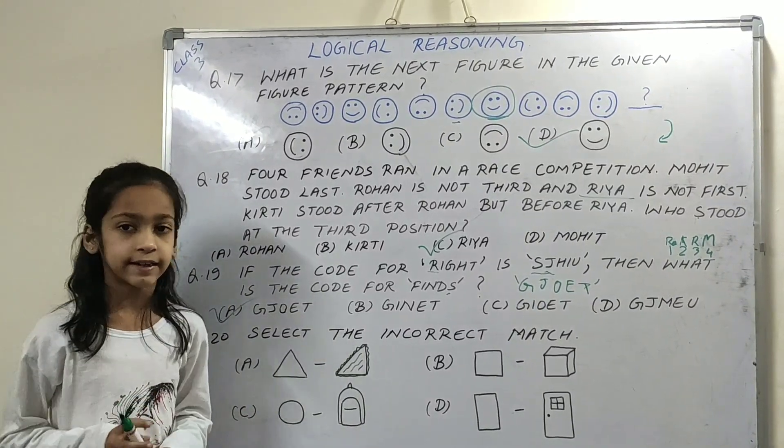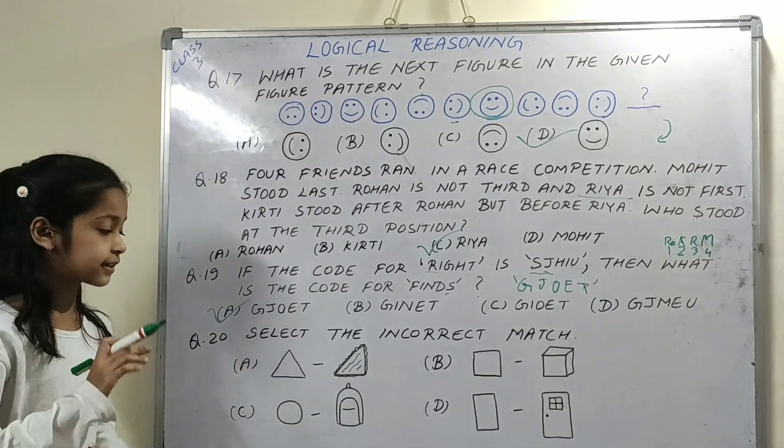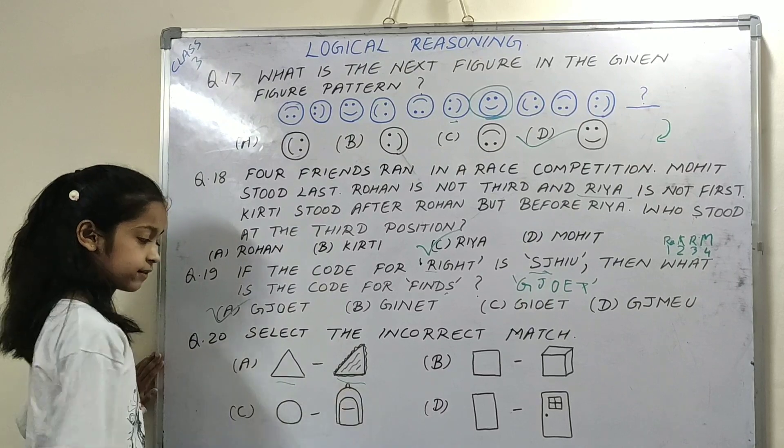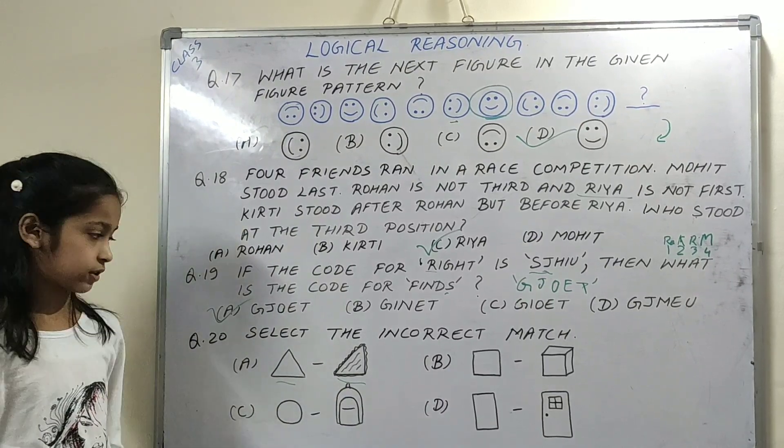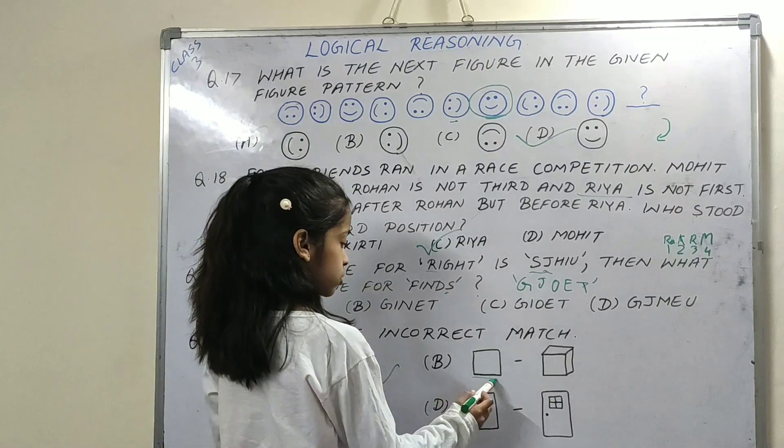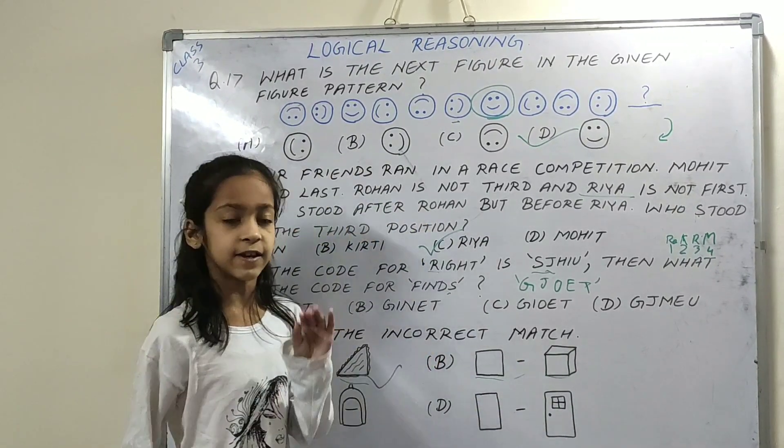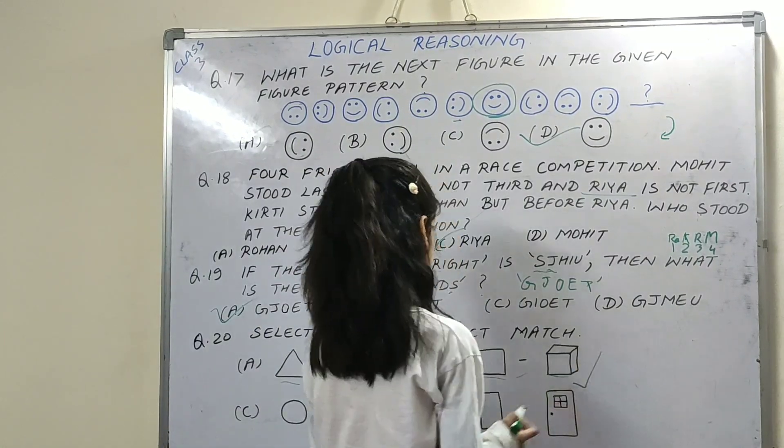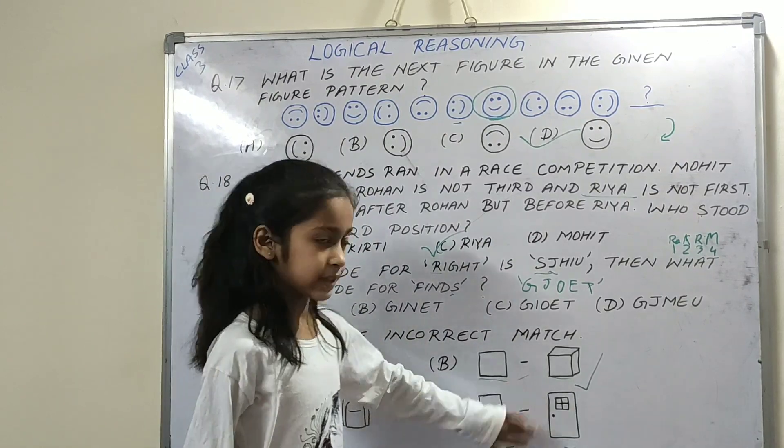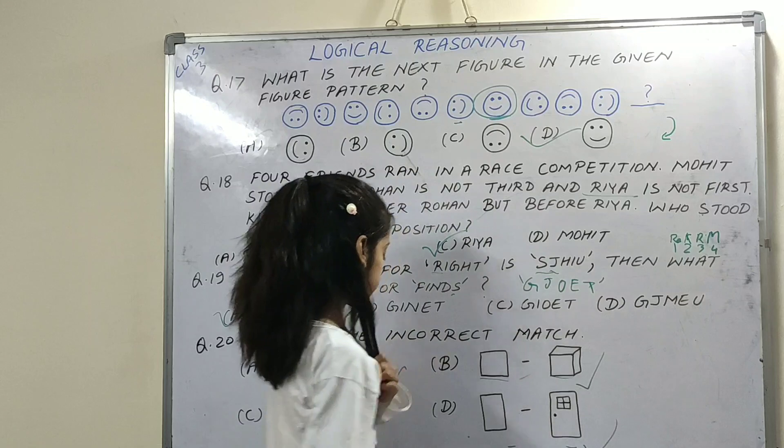Next question, select the incorrect match. We need to find which one is incorrect. This is a triangle, this is a sandwich, sandwich is also a triangle shape. These two triangles are correct. Then square and cube face, square is correct. Then option C is circle and box. The circle should match with a door, but the door is rectangular shape. So option C is the incorrect match.